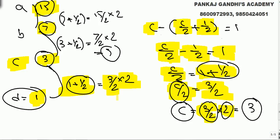Whenever the pattern is: half of the remaining and something more — go in reverse, first add what is 'more', then double it. We add because the negative becomes positive; we multiply by 2 because half was taken. So: 1 → add 1/2 → 3/2 × 2 = 3 → add 1/2 → 7/2 × 2 = 7 → add 1/2 → 15/2 × 2 = 15. Before meeting the first guard he had 15 oranges.